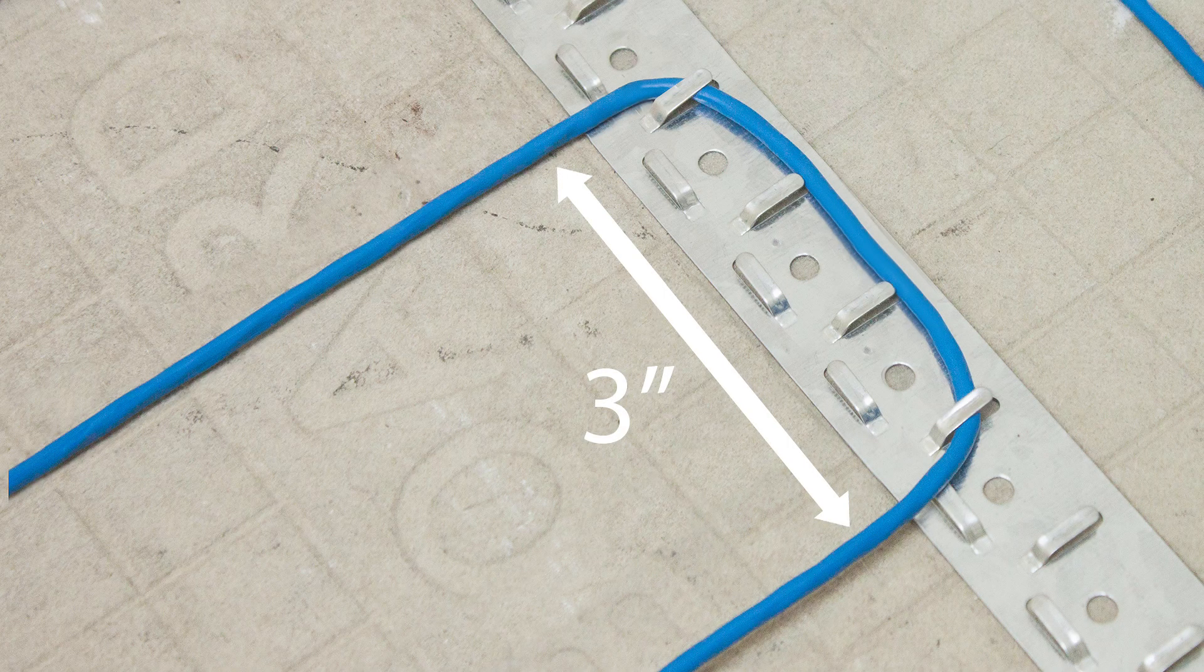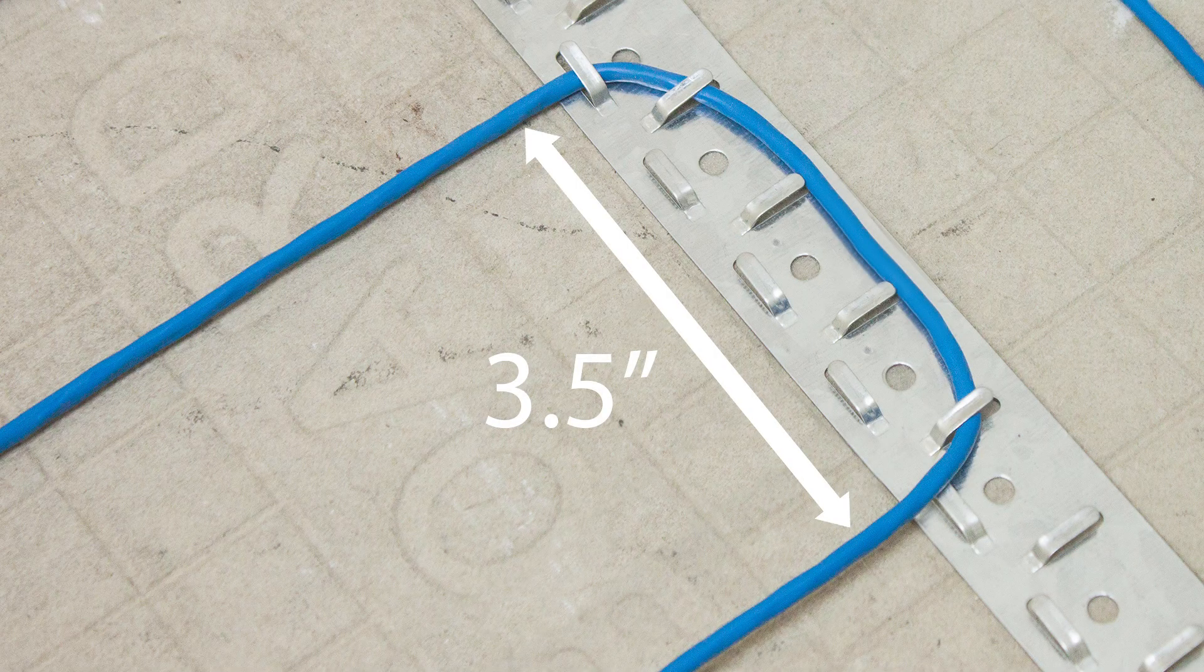For three inch spacing, use four vertical tabs. For three and a half inch spacing, wrap the wire around four vertical tabs, plus one horizontal tab.